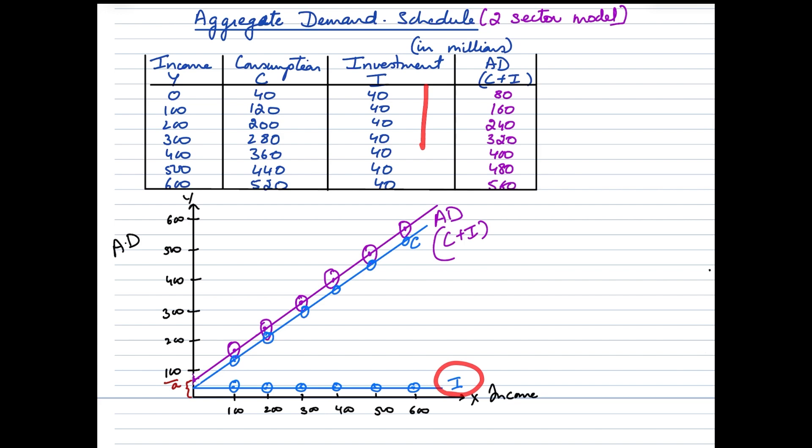Consumption expenditure begins from the same point, more or less from where investment expenditure is beginning because at 0 level of income, both consumption and investment are at 40 millions. So that's how it begins from the same point. And from there, it moves upwards as the income level increases.